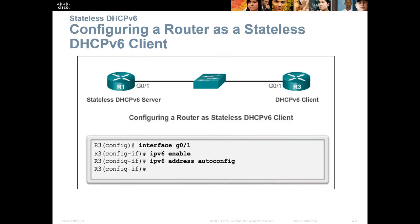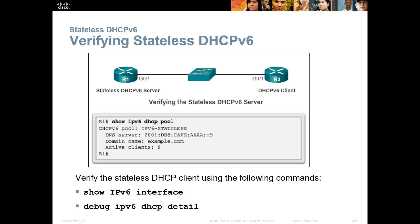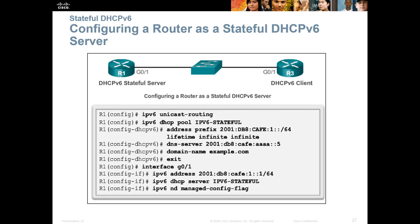To verify stateless DHCPv6 connectivity, use 'show ipv6 dhcp pool' for pool information, 'show ipv6 interface', or 'debug ipv6 dhcp detail'. To configure a router as a stateful DHCPv6 server: enable unicast routing, set up the pool with a name, configure addresses, DNS, and domain name. At the appropriate interface, put the pool name and any required flags so it pulls from the address pool. To verify stateful DHCPv6, use 'show ipv6 dhcp pool', 'show ipv6 dhcp binding', or 'show ipv6 interface'.